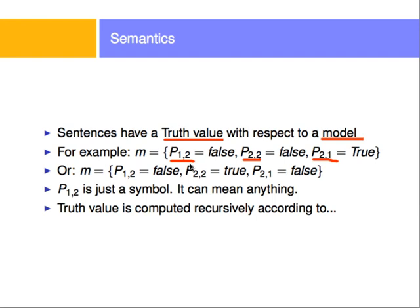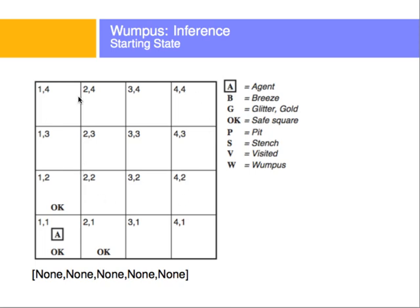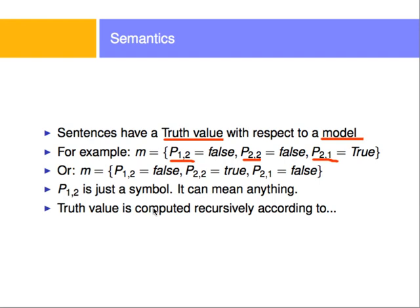I'm using P12, P22, P21 because I'm referencing the Wumpus game from an earlier video — a grid where, by knowing a few things in the environment, I must find out whether there are pits in certain squares. For example, P12 is true if I believe there's a pit at position (1,2). These assignments indicate my belief about where the pits are.